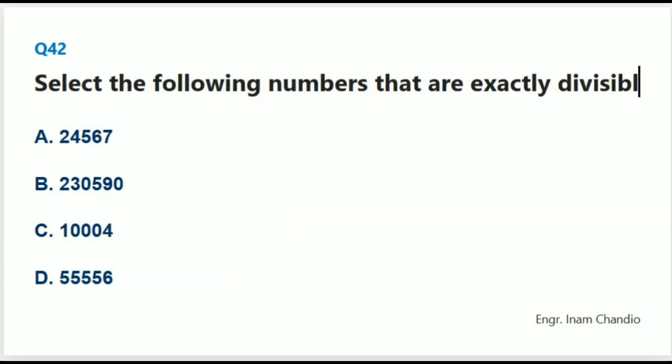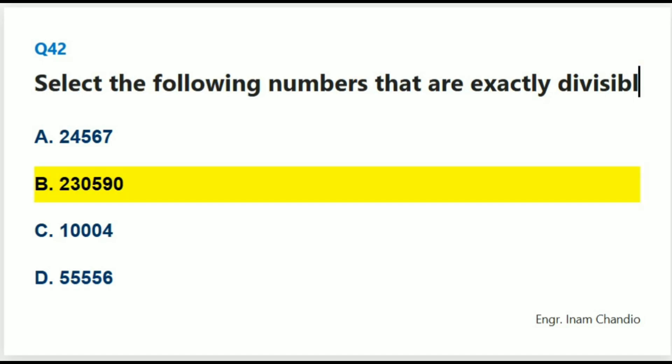Select the following numbers that are exactly divisible by 5. The correct answer is B. Two hundred and thirty thousand, five hundred and ninety.